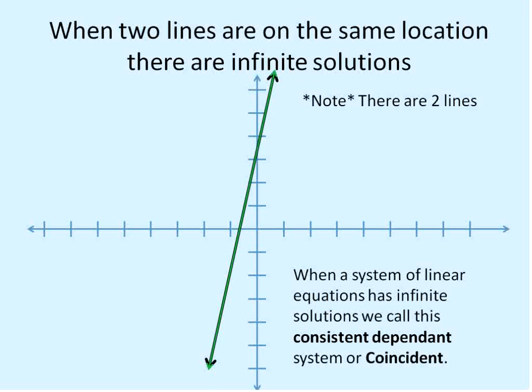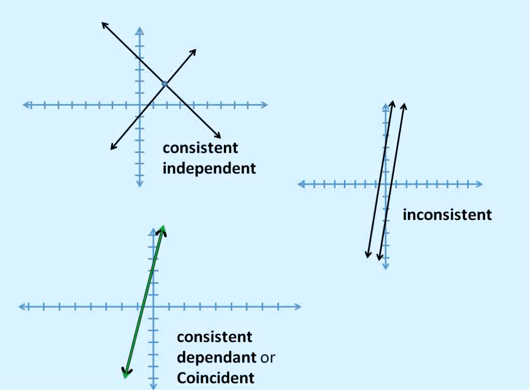Both of these terms are used, so I just want to put both of them in there. But I'll refer to them as a consistent dependent system from now on. So there are three types of systems.